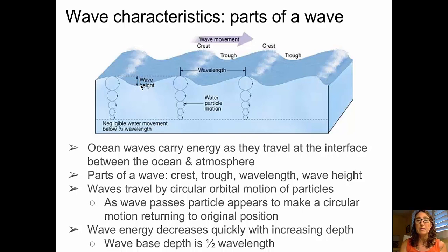As waves propagate through the ocean, they're actually moving water particles in a circular motion, shown here by small circles. The diameter of those circles becomes progressively smaller with increasing depth. Wave energy decreases quickly with depth, so the wave base is about one-half the wavelength, and below that wave base there is negligible water movement.